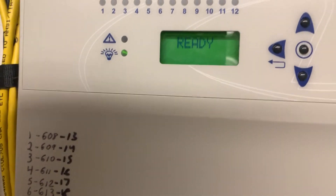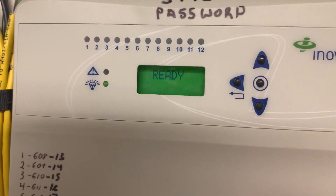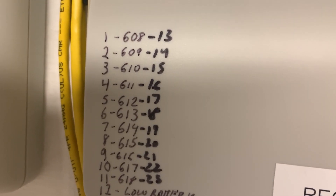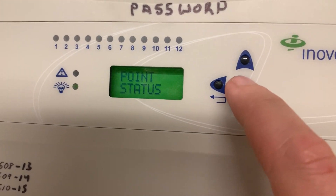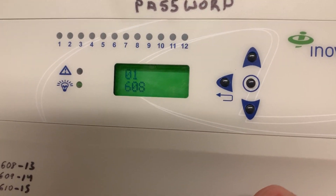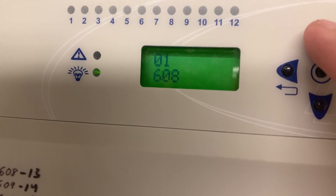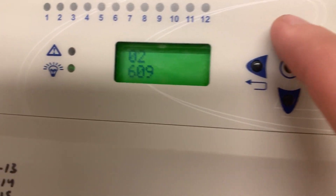But let's say for example you had a red light. What you'd want to do to figure out the problem with one of these 11 transmitters for these 11 rooms is just hit the enter button, go to point status, hit enter again, and scroll up through the points. You can see room device number one is 608, two is 609, and so on.